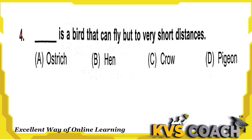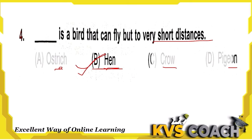Next question: which is a bird that can fly but only for a very short distance? Ostrich cannot fly at all. The hen is the bird which can fly only a very short distance. Crow and pigeon can fly high in the sky. So Option B is the right answer.